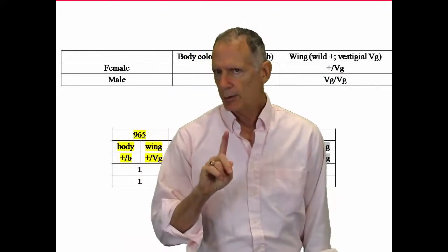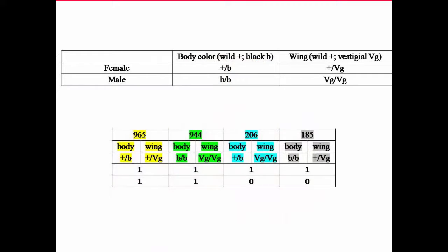and this will show up to be kind of an astonishing result in just a minute, he got 965 with dominant wild body and dominant wild wing. He got 944 with black body recessive and a vestigial wing, which is recessive. He got 206 with a wild body but a vestigial wing, and he got 185 with a black body and a wild wing.